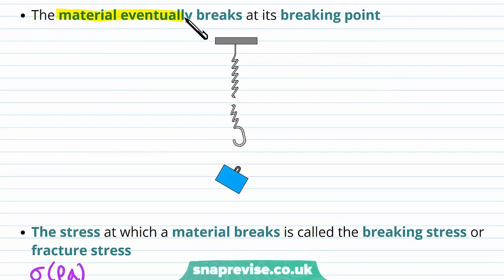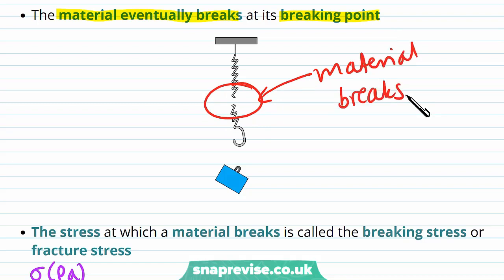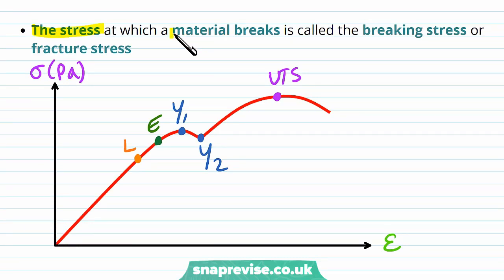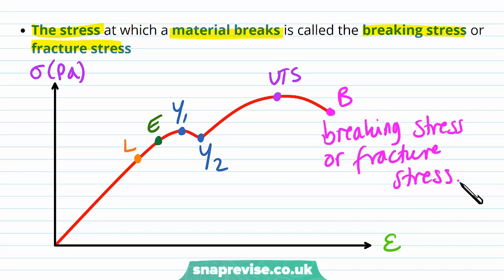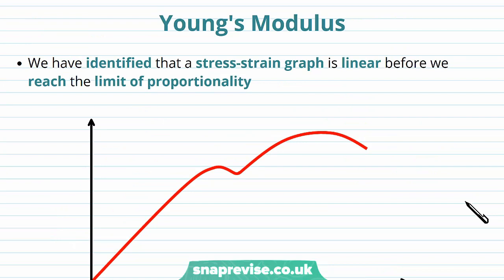The material eventually breaks at its breaking point — the point at which it splits into two. The stress at which a material breaks is called the breaking stress or fracture stress, labelled B. That's the very end of the graph, because beyond this point the material is broken and no longer experiences a stress or strain.